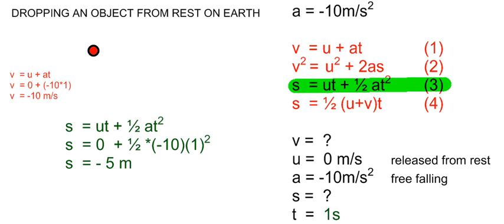We can also find the displacement of the body after falling for 1 second using equation 3. Substituting: the initial velocity is 0, so the product of ut is 0. Plus one-half times the acceleration, which is negative 10, times the time squared, which is 1 second squared, gives us a displacement of minus 5 meters. The minus refers to the fact that it is a downward displacement.